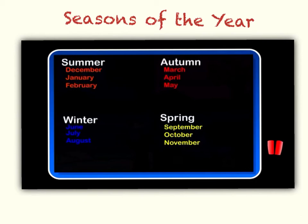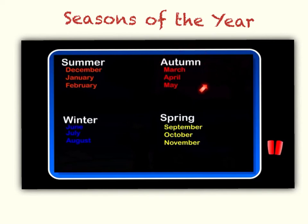Now I'd like you to point to the season of the year that your birthday is in. My birthday is in November, so the season my birthday is in is spring. If your birthday was in January, December, or February, the season of your birthday would be summer. If your birthday was in March, April, or May, the season would be autumn. And if your birthday was in June, July, or August, it would be in winter.